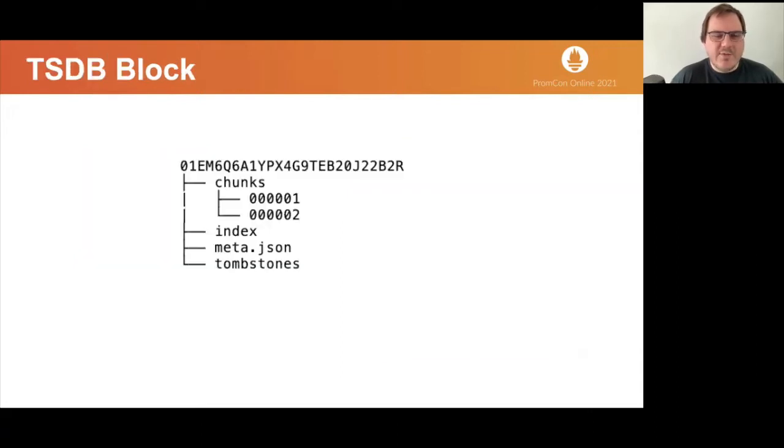Let's take a look at TSDB blocks now. Block consists of multiple files on disk. Each block has a unique identifier that encodes timestamp when this identifier was generated and random part for uniqueness. Inside chunks subdirectory, there are so-called segment files, which are numbered. In this image, there are two. Block also has an index stored in a single file. Metadata are stored in a small file in JSON format. And finally, there are tombstones, which Cortex currently doesn't use.